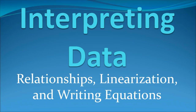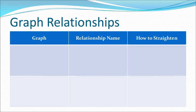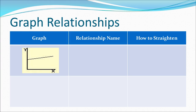Now that we understand how to collect and interpret our data, it's time to analyze the relationships that exist between our variables. By deriving equations from these mathematical and graphical relationships, we can predict motion. When you graph two variables together in a lab setting, you'll see four common relationships formed. The first graph is a nice straight line — we call this relationship a direct relationship.